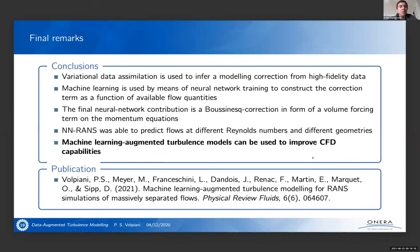So just to conclude, in this work we combined variational data assimilation to infer a modeling correction from high fidelity data and machine learning to construct the correction term as a function of available flow quantities. Then the final neural network contribution is a Boussinesq correction in form of volume forcing term on the momentum equations. And we showed that this new model was able to predict flows at different Reynolds numbers and different geometries. And we showed that machine learning augmented turbulence models could be used to improve CFD capabilities. And then we just published this work. So if you're interested in more results or any more details, please go and see our publication. And then I would also like to thank the European project Hi-Fi Turb for supporting this research and also Karthik for organizing this symposium. Thank you. If you have any questions, please let me know.